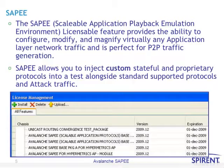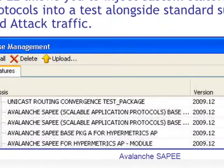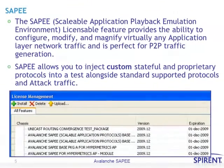SAPI allows you to inject custom, stateful, and proprietary protocols into a test alongside standard supported protocols and attack traffic. We're looking at the license management screen of a SPIRA and test center, and you must have a SAPI license in order to use SAPI.